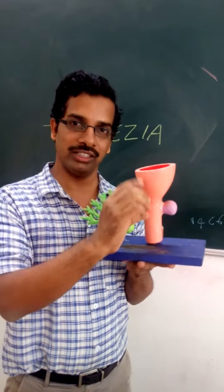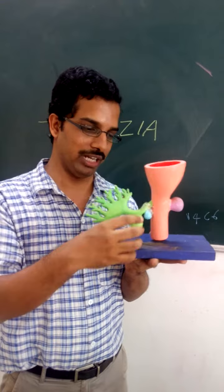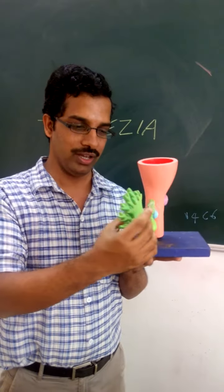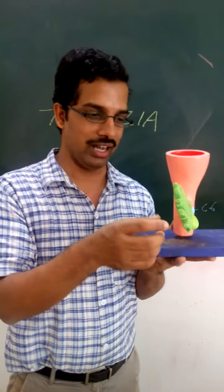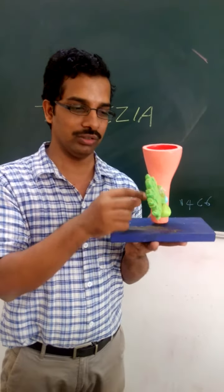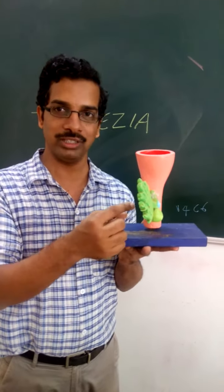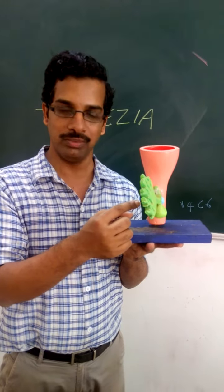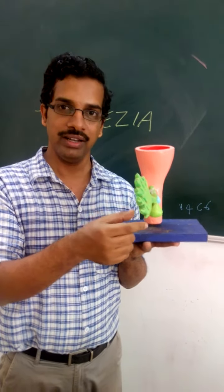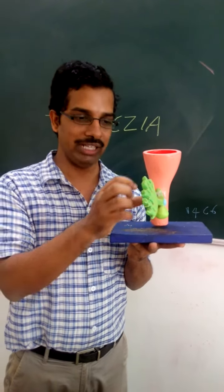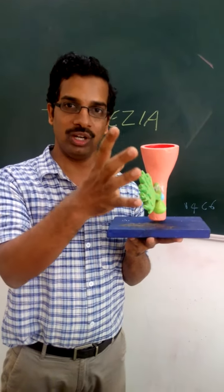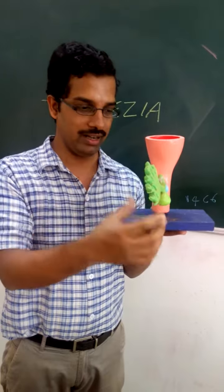At the union of the foregut and the midgut, there will be an outgrowth. Initially it will be anterior, and this outgrowth — represented in green — will be the hepatic bud. The hepatic bud will outgrow and form the liver.